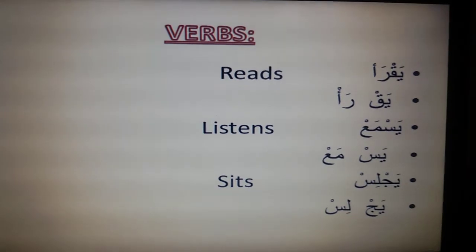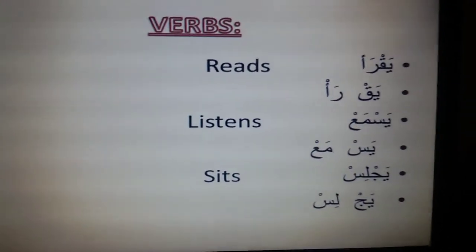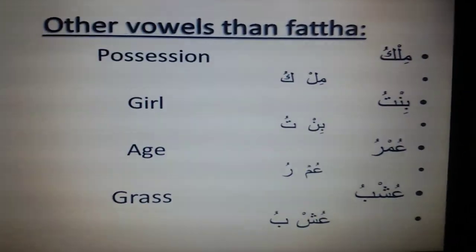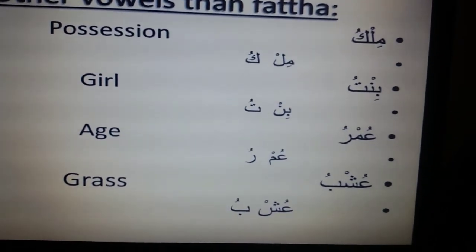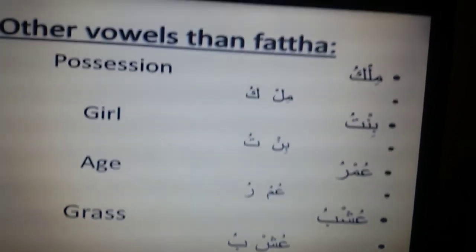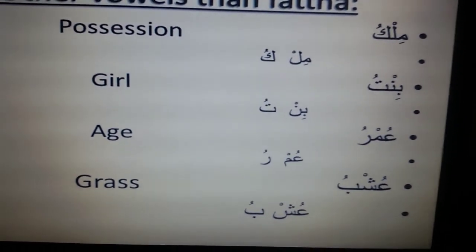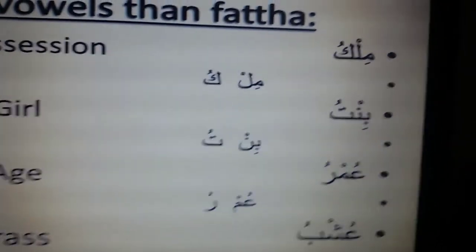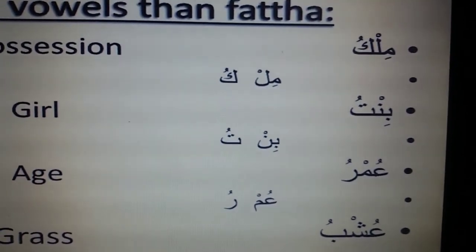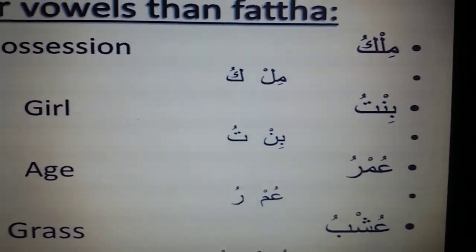Now let's look at words where the letters have short vowels other than fatha — specifically kasra and dhamma. We have four words: milku meaning 'position', bintu meaning 'girl', umru meaning 'age', and ushbu meaning 'grass'. For milku: meem with a kasra gives 'mi', lam with the Sukun gives 'l', so 'mil'. The last letter kaf with a dhamma gives 'ku', so milku.